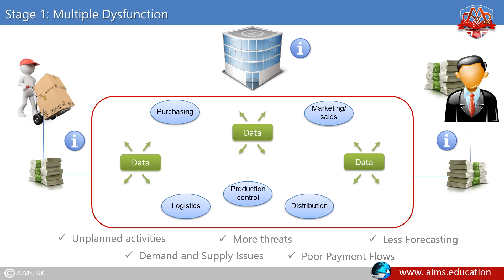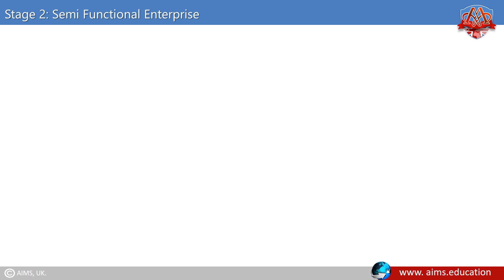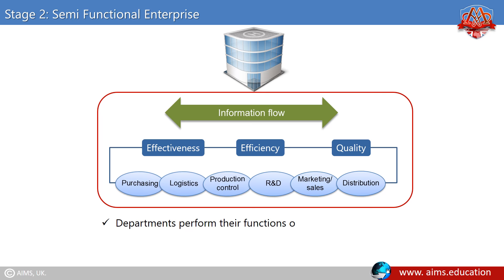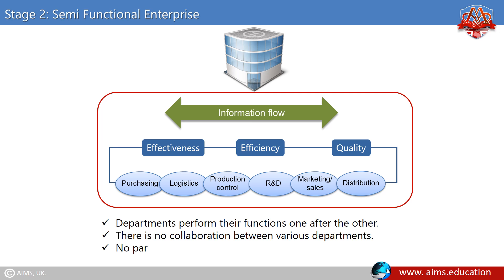In stage 2, the semi-functional enterprise, the nucleus organization begins to improve effectiveness, efficiency, and quality within functional areas. Information flow has been improved and functional areas have been defined; however, departments perform their functions one after the other. There is no collaboration between various departments and no partnership formed with customers and suppliers.